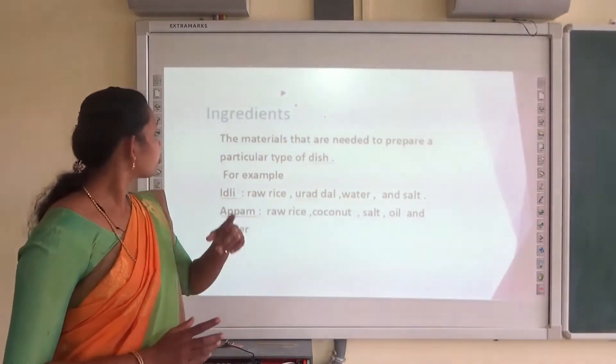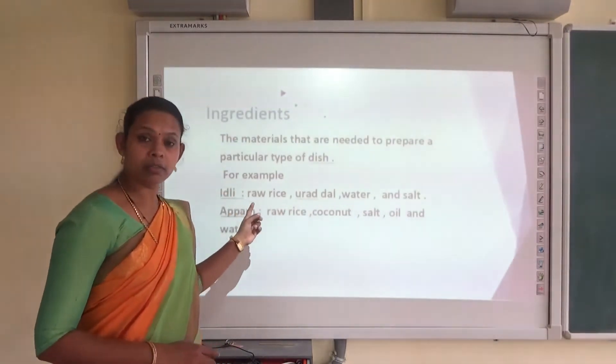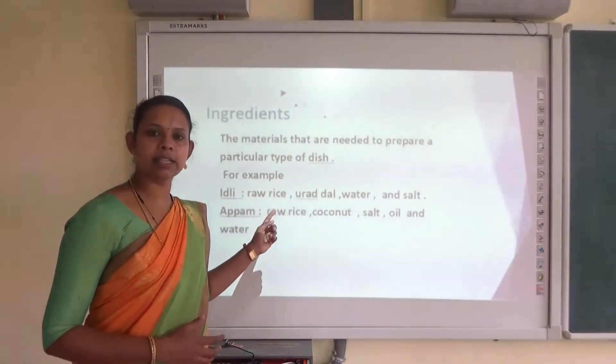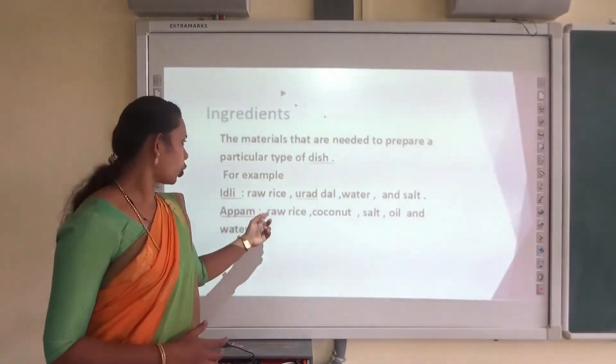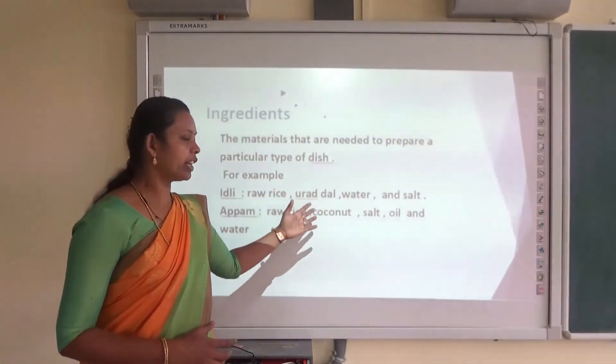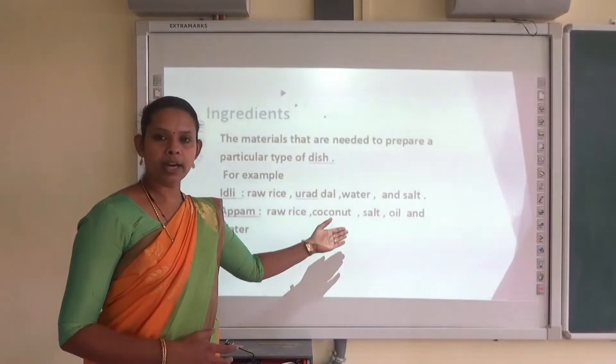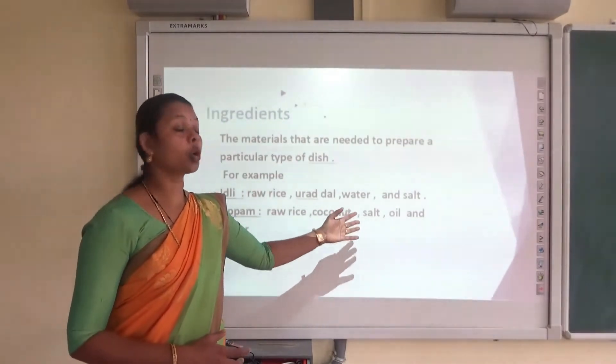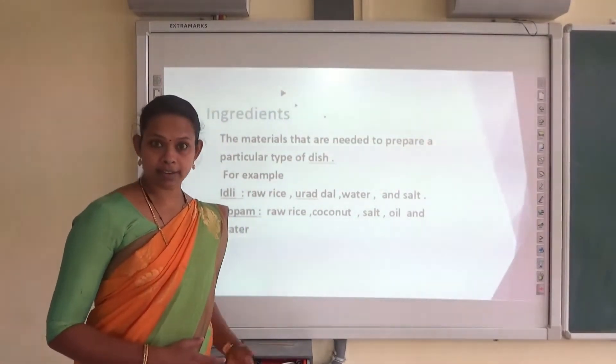For example, in the case of rice, the ingredients needed are raw rice, curry, dal, water, salt, etc. And in the case of pongal, raw rice, pork, peanut, salt, oil and water are necessary.